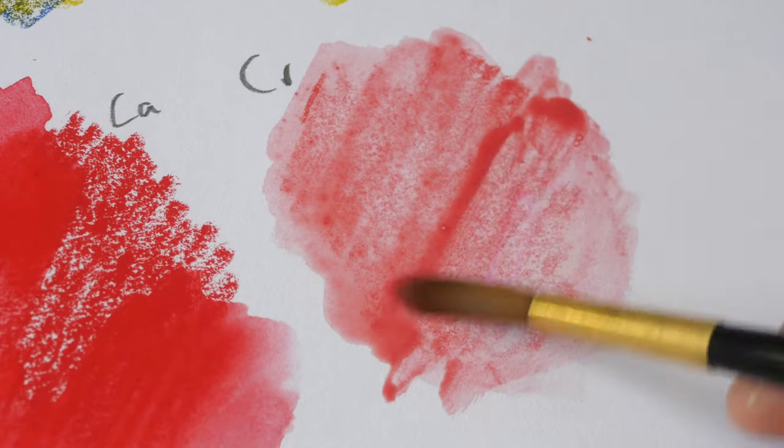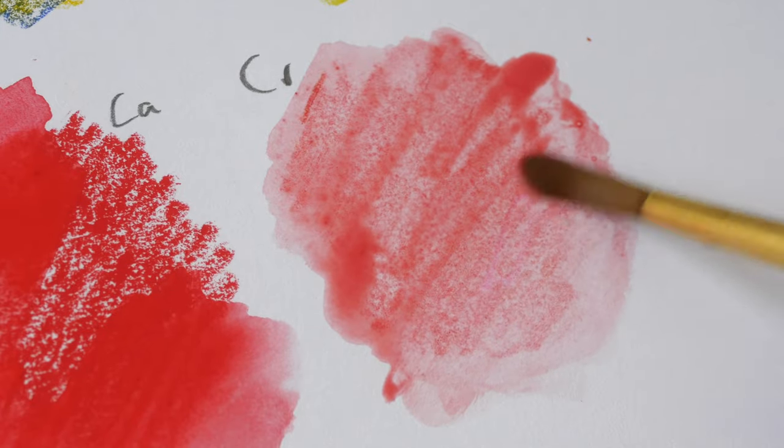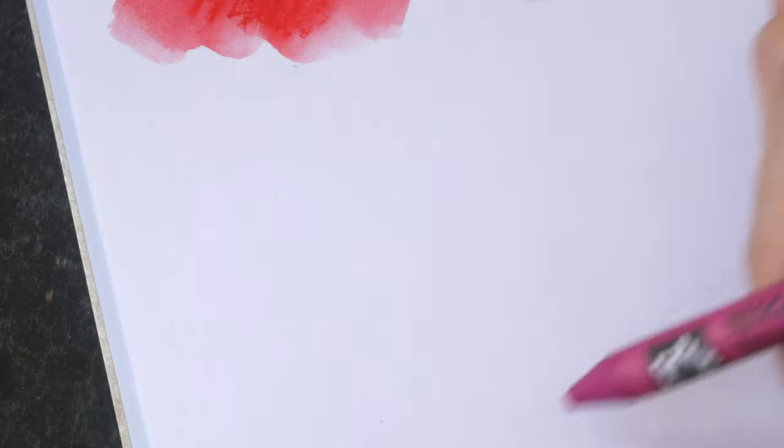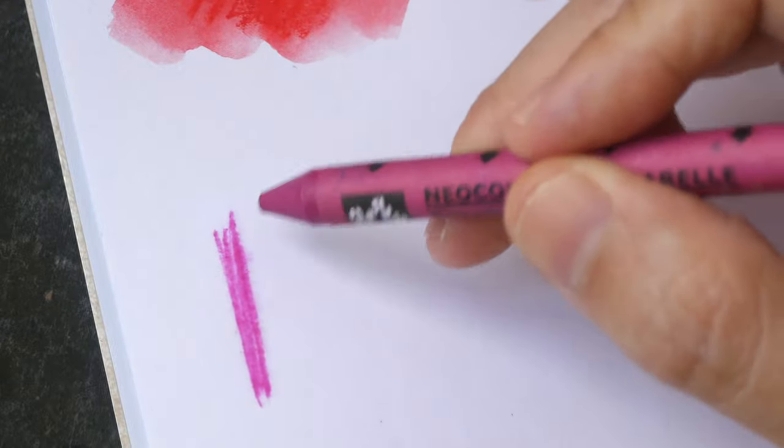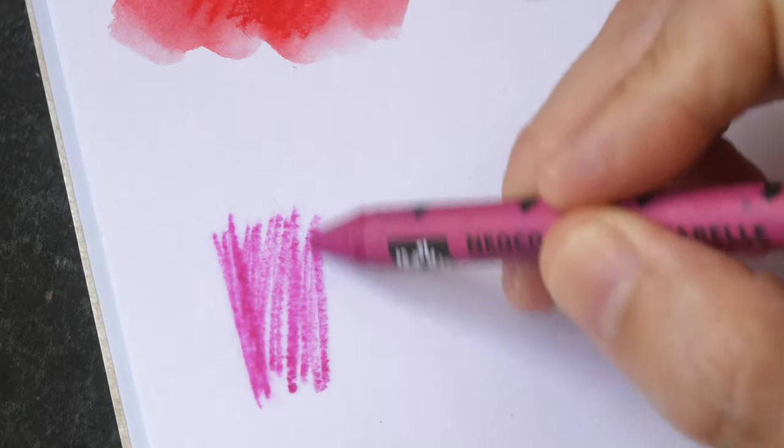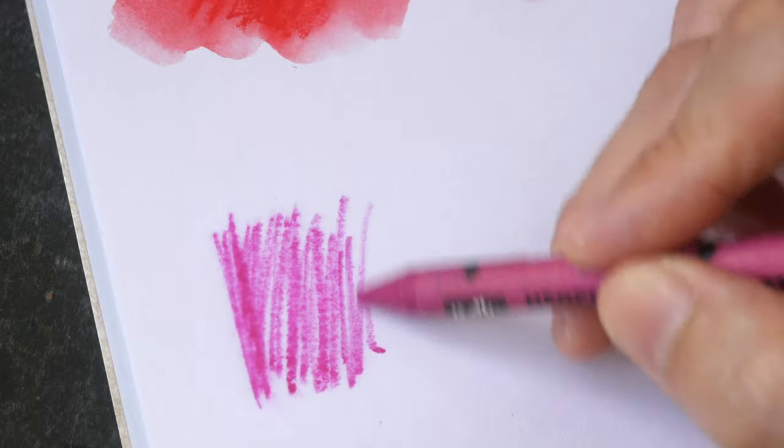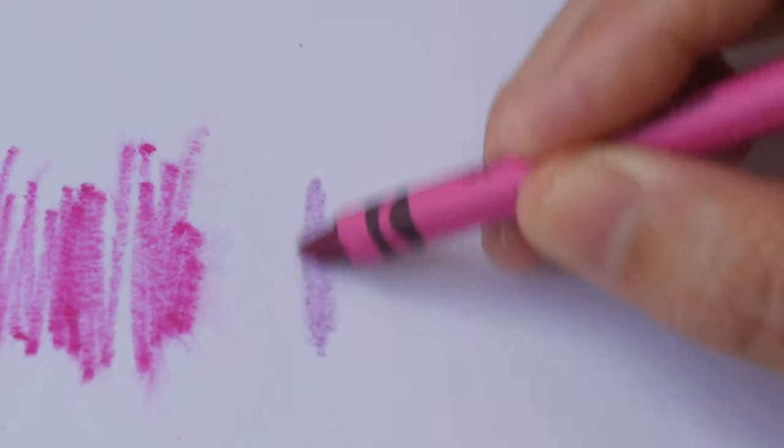I mean you do get what you pay for. If I keep doing this I'm pretty sure the paper fiber will come off. I'm going to draw on this wet area first. Now I'm drawing on this wet surface, you can see the color is pretty intense.